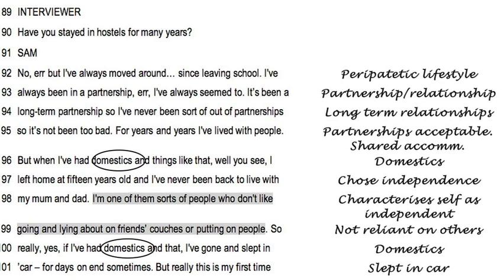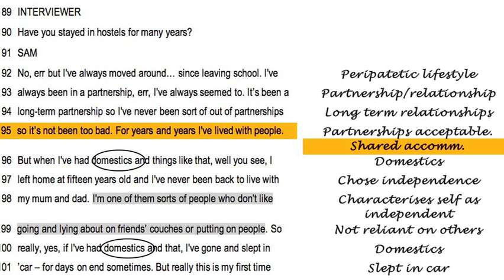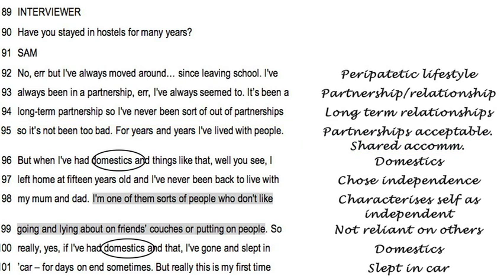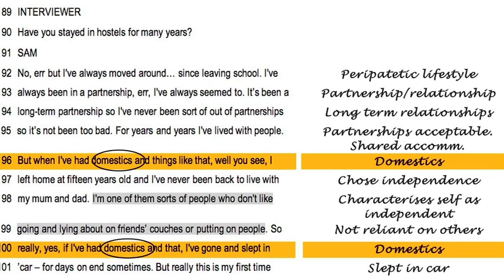I also want to show how some of these codes can be simply descriptive. For example, line 95: 'for years and years I've lived with people' — I put 'shared accommodation.' That's simply descriptive, nothing more. But elsewhere I begin to get less descriptive and move away from it. 'Domestics' is one thing — he uses that term and I've circled a couple of occasions where he talks about that. Elsewhere in the interview he talks about having the police involved. There are hints of something more going on — some kind of more general category.